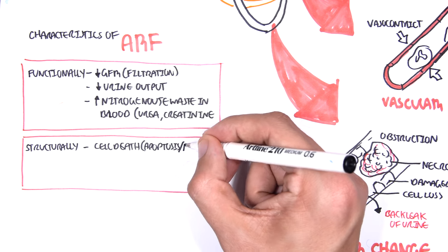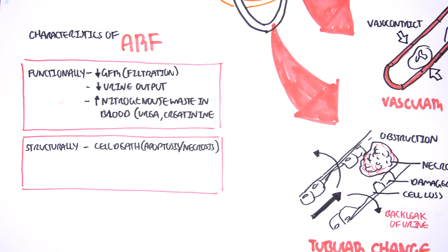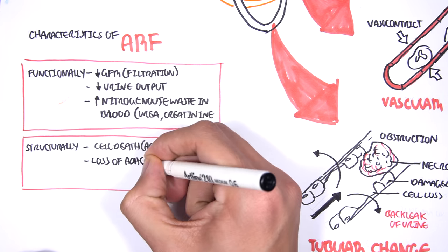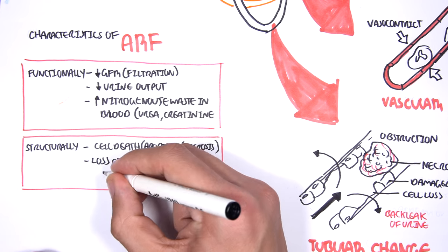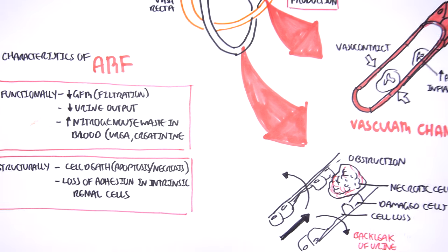Structurally, in acute renal failure, we have cell death due to apoptosis or necrosis, as well as loss of adhesion to intrinsic renal cells. And this will lead to obstruction and stuff like that.